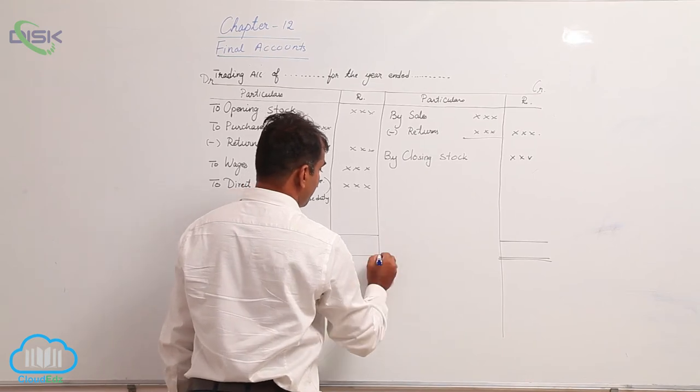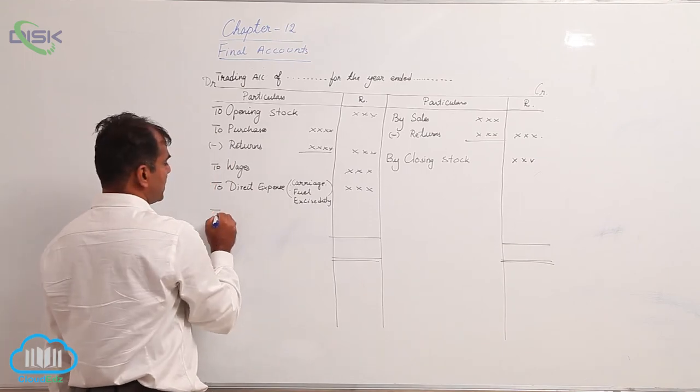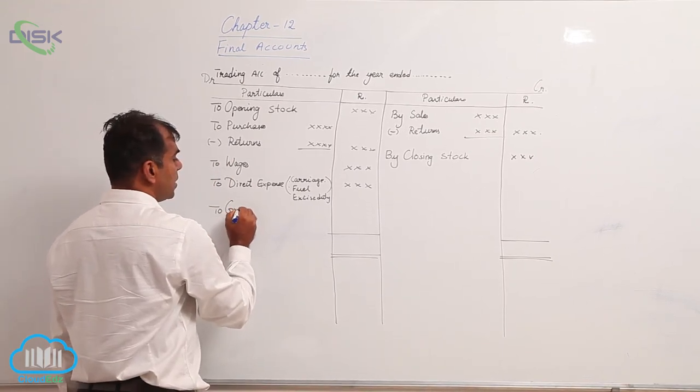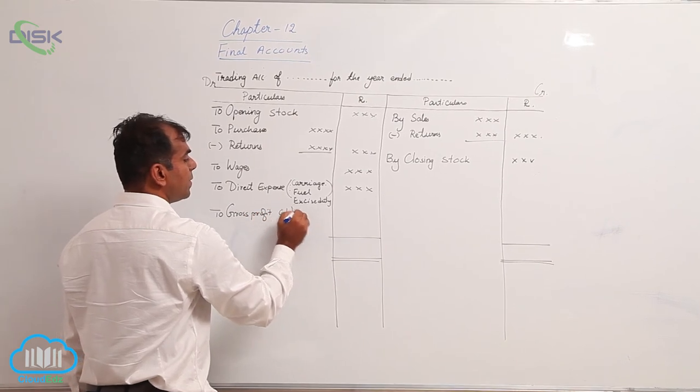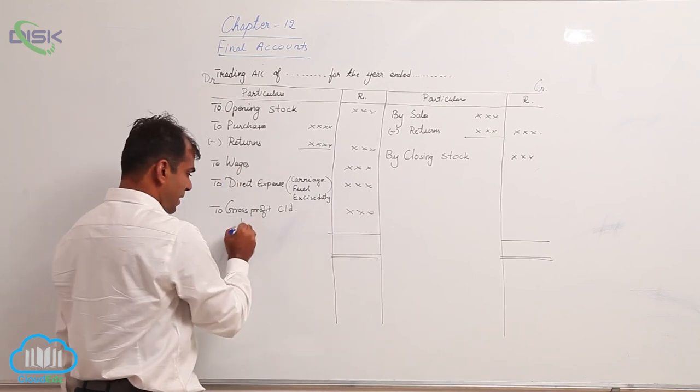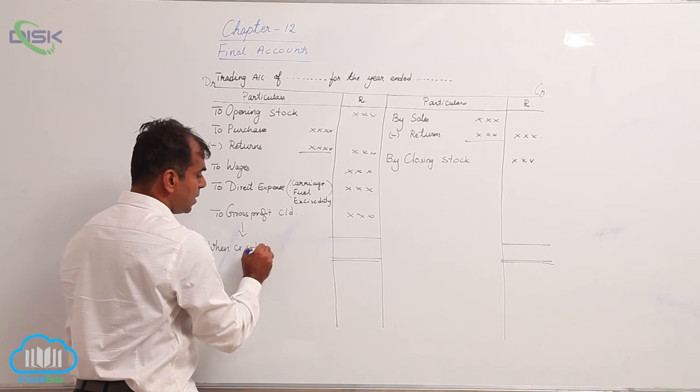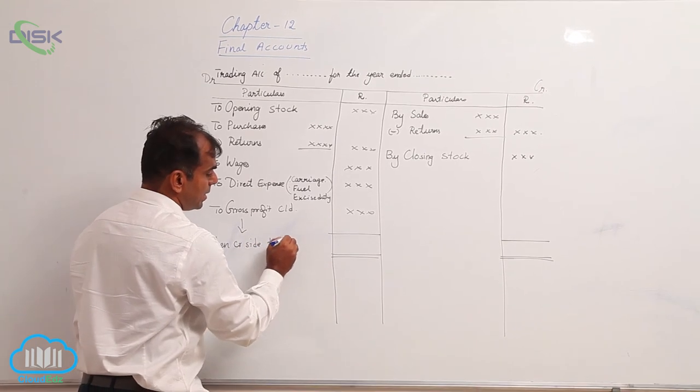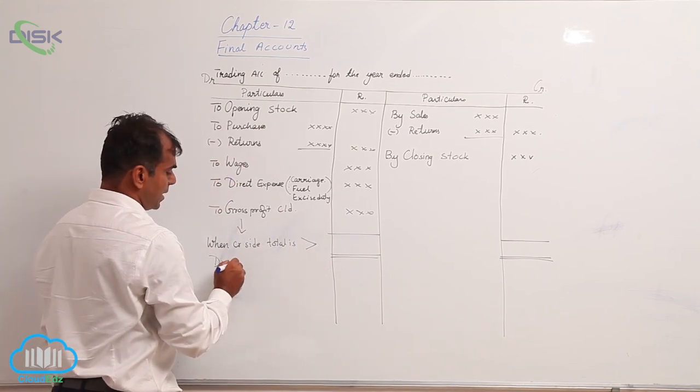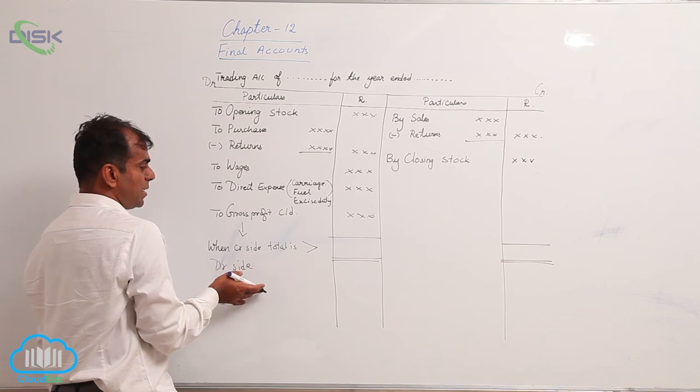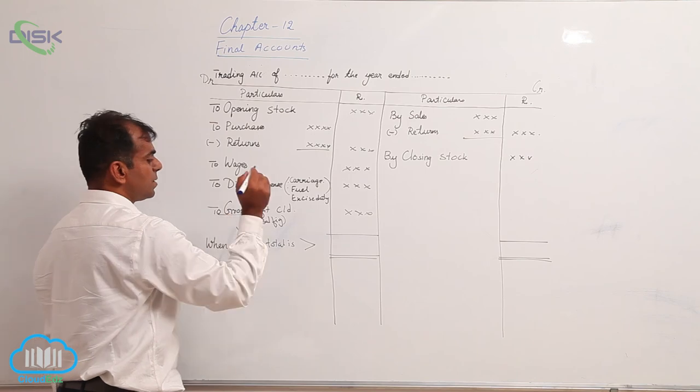The difference, if the credit side is more, we will be writing as 'to gross profit carried down.' When we have gross profit, I'm putting the condition: when credit side total is more than debit side total, the balancing figure is regarded as your gross profit.